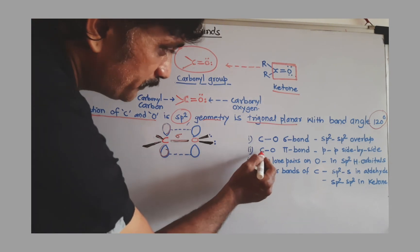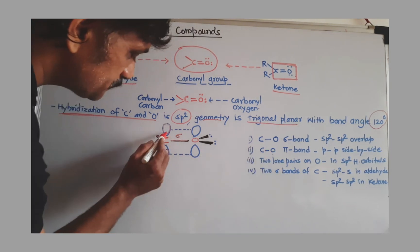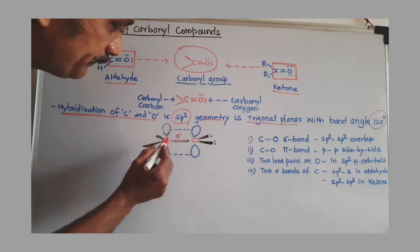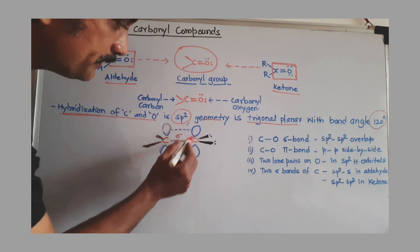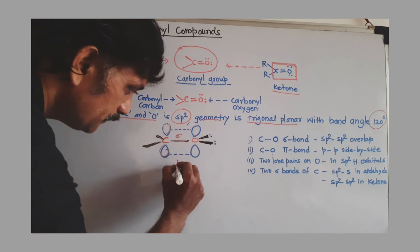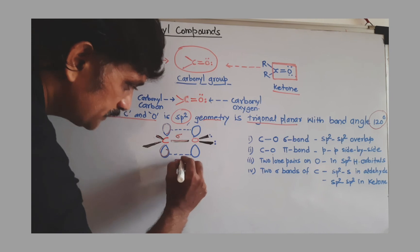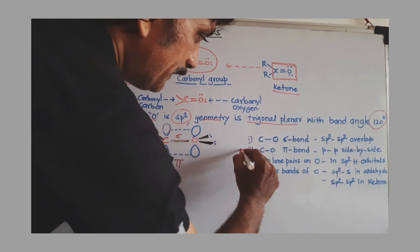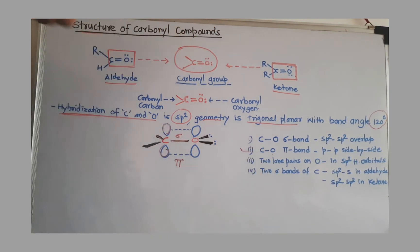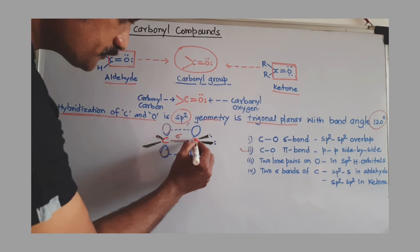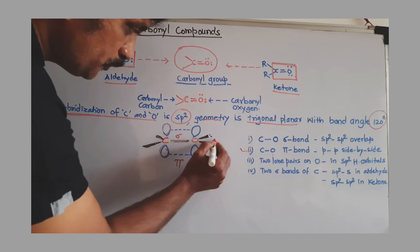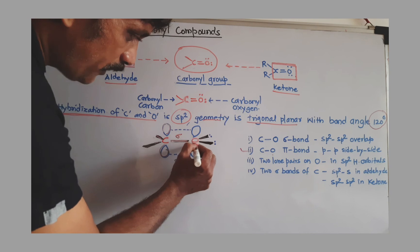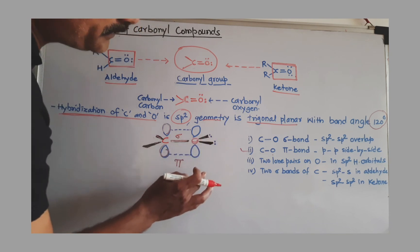There is a pi bond between carbon and oxygen, and this pi bond is formed after the lateral overlapping of p orbitals, as shown by a dotted line. Additionally, two lone pairs of electrons are present on the oxygen.